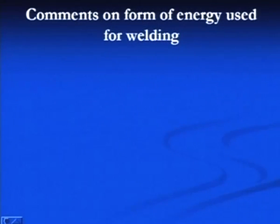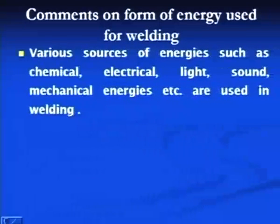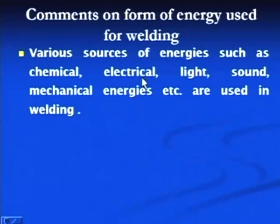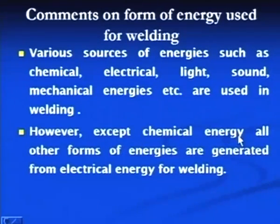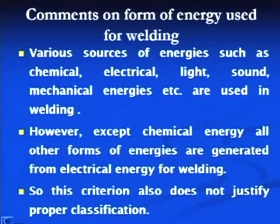We will now see the comments on the form of energy used for classifying welding processes. Various forms of energy are used for producing weld joints, such as chemical energy, electrical energy, light, sound, and mechanical energy. However, except for chemical energy, all other forms of energy are generated from electrical energy for welding purposes. That is why this criterion is also not justified for proper classification of welding processes.